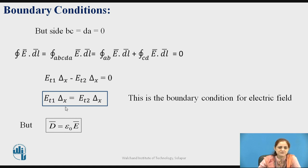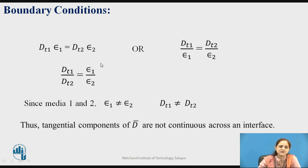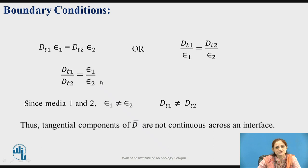We know that D-bar equals ε·E-bar. Using the relation D-bar = ε·E-bar, we get DT1/ε₁ equals DT2/ε₂, or equivalently DT1/DT2 equals ε₁/ε₂. Since ε₁ is not equal to ε₂ — that is, the permittivities for medium 1 and medium 2 are different — DT1 is not equal to DT2. Thus, the tangential components of D-bar are not continuous across the interface between the two media.